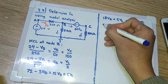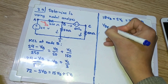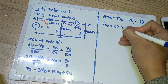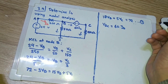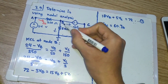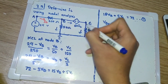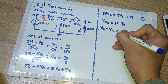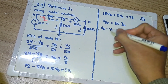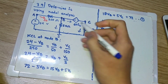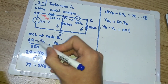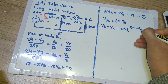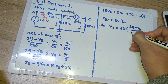Because of that voltage source, we have VBC equals 60 times IB. VBC is basically the voltage difference between node B and node C, so we can write it as VB minus VC equals 60 times IB. Now, IB is equal to (24 minus VB) divided by 250.